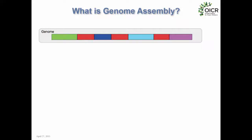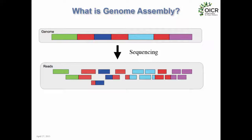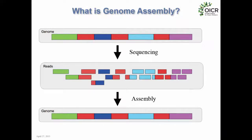We'll start by answering the question: what is genome assembly? When we take a genome and sequence it, we're breaking it into a bunch of random fragments that are much shorter than the genome, putting those onto a DNA sequencer, determining their sequence, and then putting them back together. Assembly is the inverse of sequencing — sequencing fragments the genome into many pieces, and assembly stitches those pieces back together.